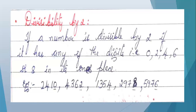You can say that for the given number, if the last digit in ones place is even, then it is divisible by 2. The examples are 2410, 4362, 1354, 2978, and 5976. In each number we can see that the last digit — ones place — is 0, 2, 4, 8, and 6 respectively, which means all these numbers are divisible by 2.